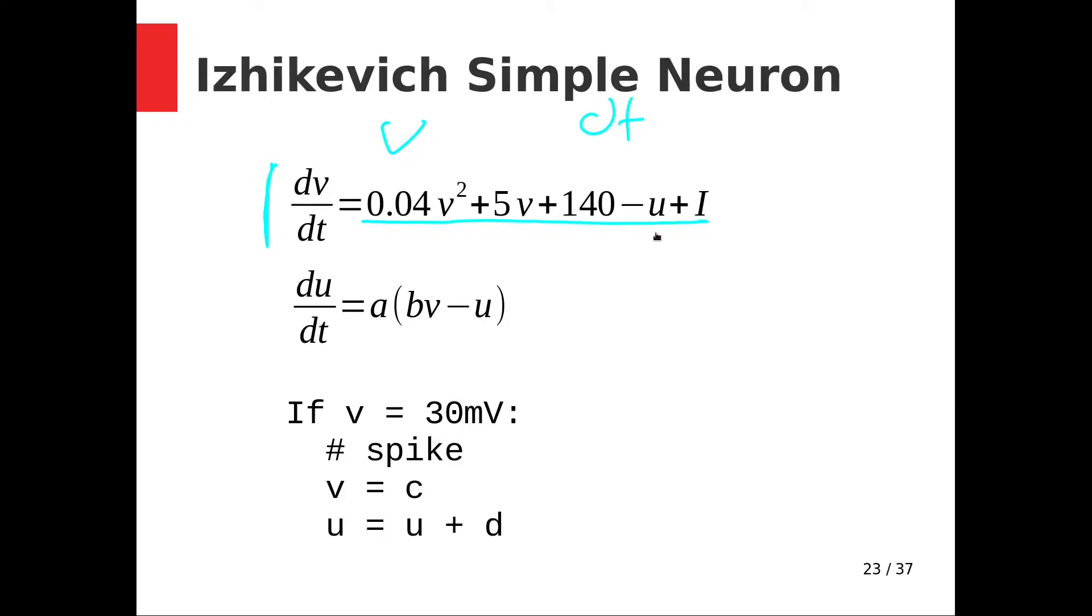And this is, in the terms of these things, a fairly simple rule. It is a polynomial of degree 2, where the highest power in it is 2. And it has this additional minus u term, where u is a recovery variable, and this additional plus i still, where i is any current we care to inject.